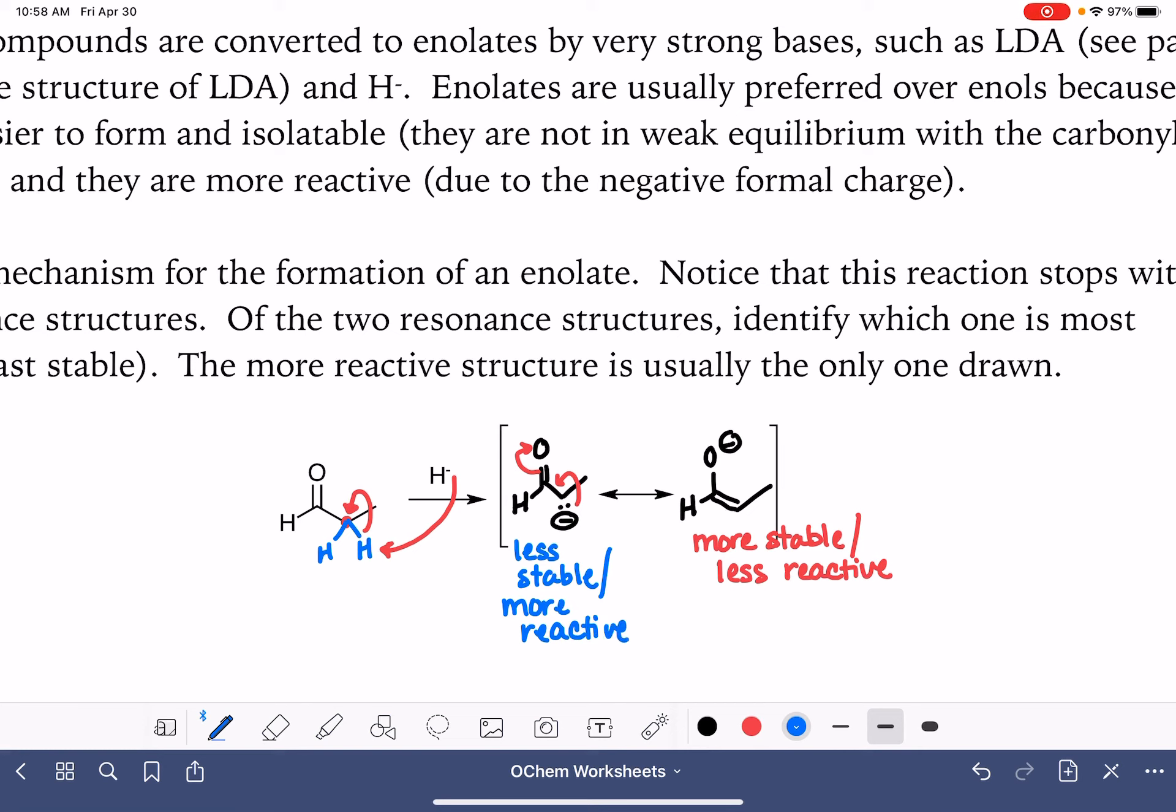And because this is the reactive version of the enolate, this is the form that it's in when it's undergoing chemical reactions. Typically this is the only version of the enolate that chemists draw. For mechanism purposes, this is the form that we use when we're drawing a mechanism.